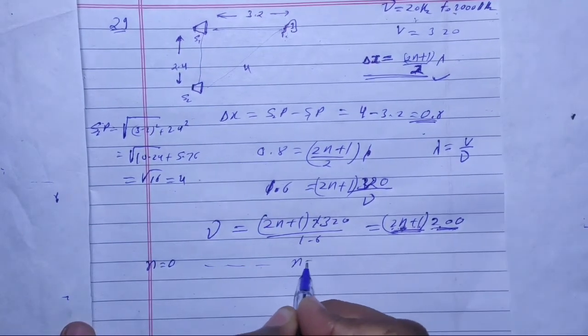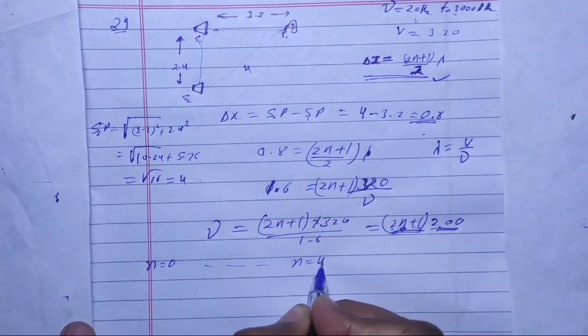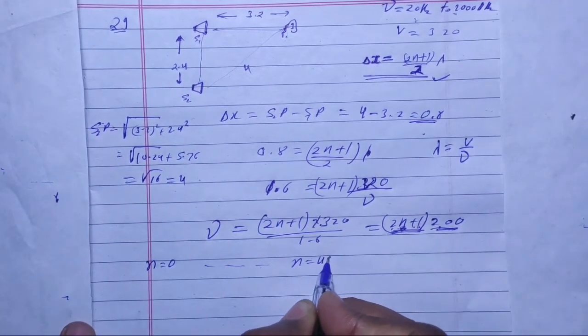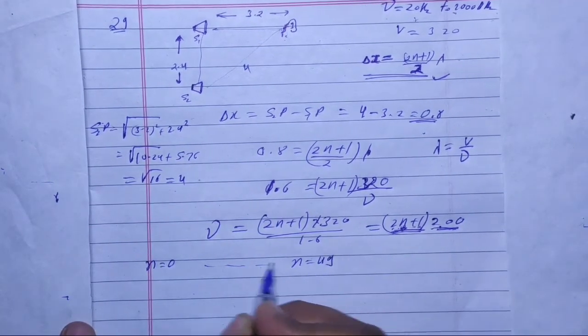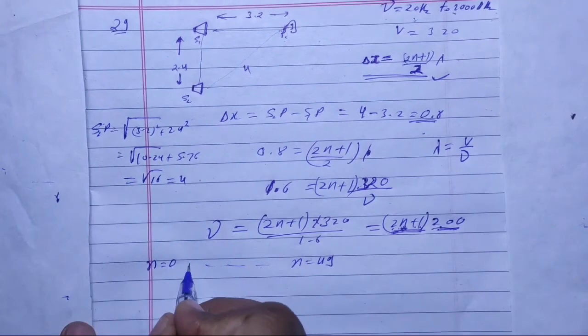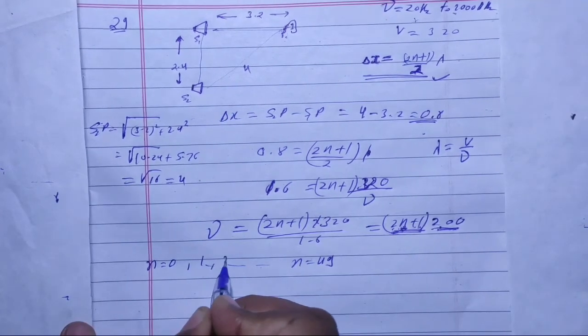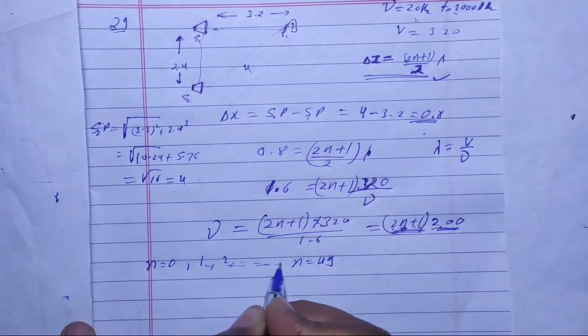So n can take values from 0 to 49. For each of these values of n, the corresponding frequency (2n+1) × 200 Hz will fall within the audible range, and minimum intensity will be heard at those frequencies.